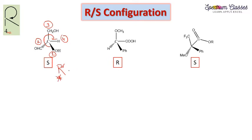For the next sub-example: this is my first priority group, second priority group, and third priority group. Here the dashed line wedge places the fourth priority group on the vertical line, so the rotation directly gives R configuration.